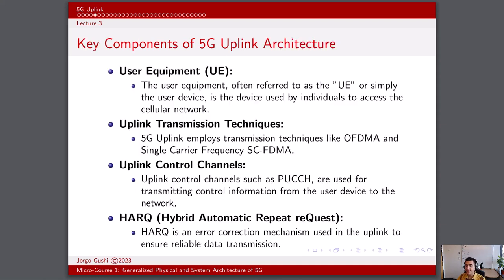Some key components of the 5G uplink architecture include the user equipment, often referred to as the UE or simply the user device, which is the device used by individuals to access the cellular network. This includes smartphones, tablets, laptops, IoT devices, and more. We also have uplink transmission techniques: 5G uplink employs transmission techniques like Orthogonal Frequency Division Multiple Access, or OFDMA, and Single Carrier Frequency Division Multiple Access, or SC-FDMA.